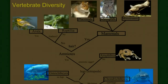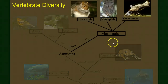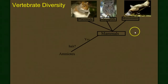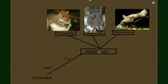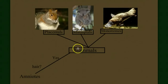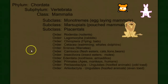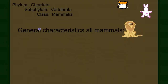Welcome to our last video in our series on vertebrate diversity. In this video, we're going to focus on our last class in the vertebrate subphylum, the mammals. One of the interesting things we're going to do in this group is look at the three subclasses of mammals: the monotremes, the marsupials, and the placentals. But before we do that, let's focus on the general characteristics of all mammals.